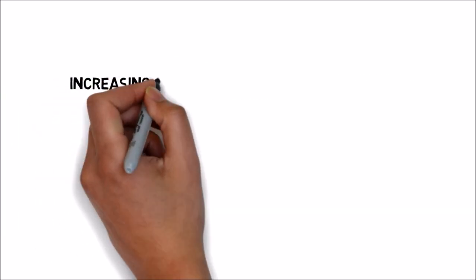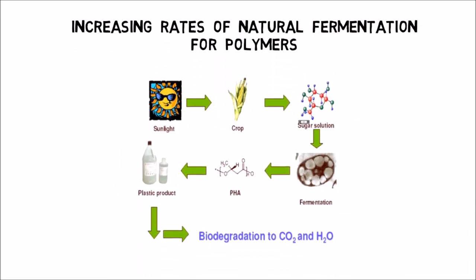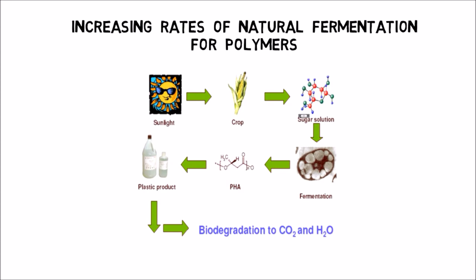Increasing rates of natural fermentation for polymers. Traditional plastics materials for example PVC polyvinyl chloride, PP polypropylene and PET polyethylene terephthalate are produced using petrochemical substances and carbon elements which make them limited resources. As a solution first generation polyhydroxyalkanoates are naturally produced by fermentation of sugar solutions using specific bacteria.